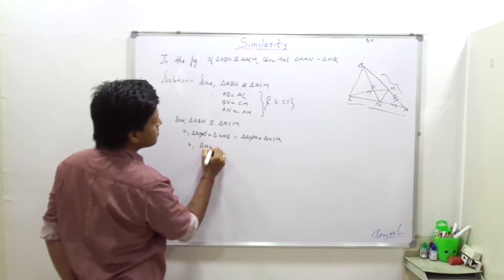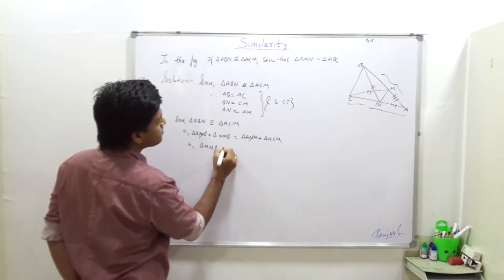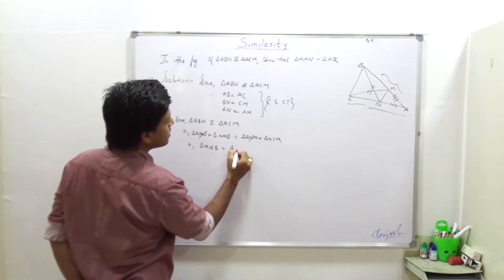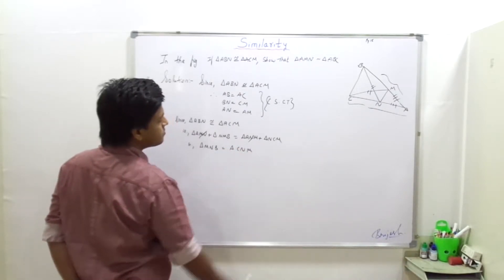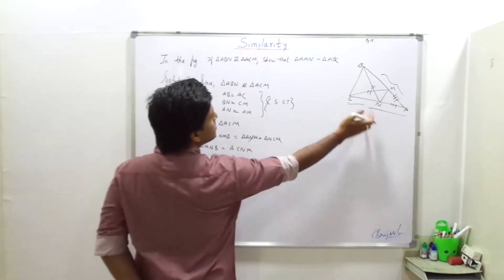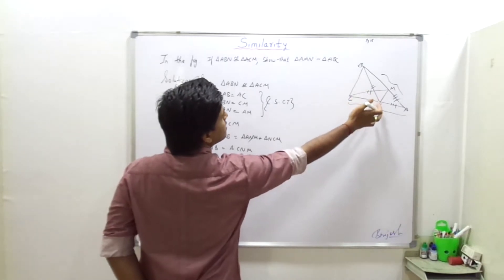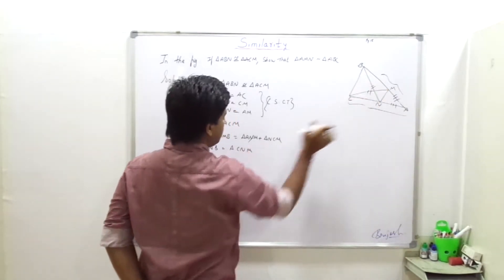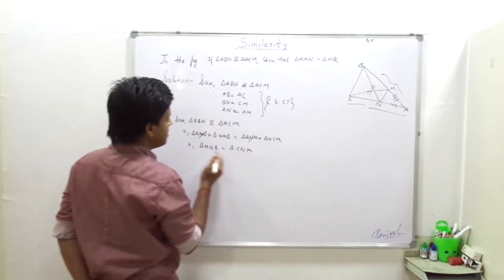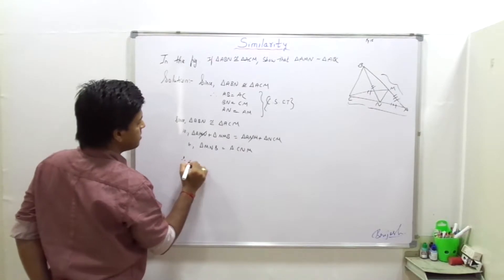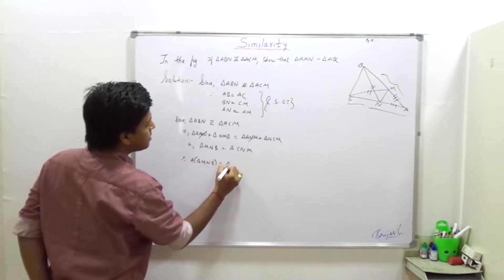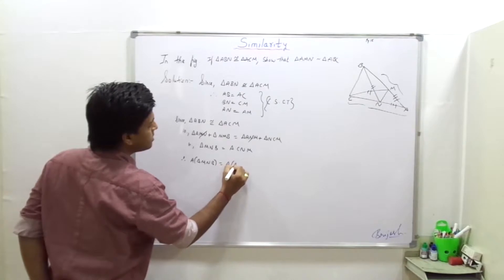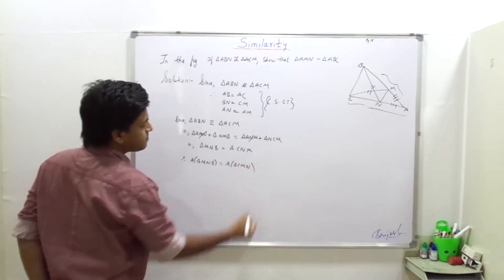Triangle MNB is equal to triangle CNM. So therefore, the area of triangle MNB will be equal to the area of triangle CMN.